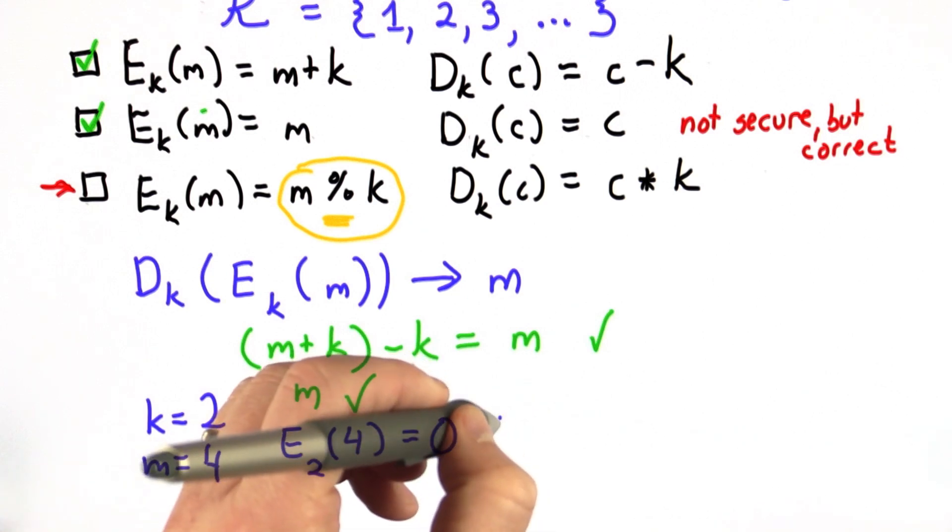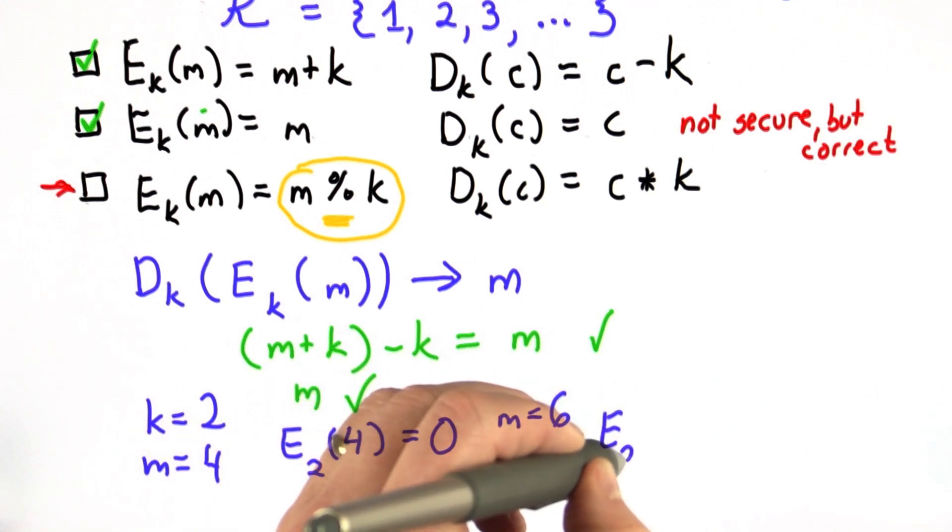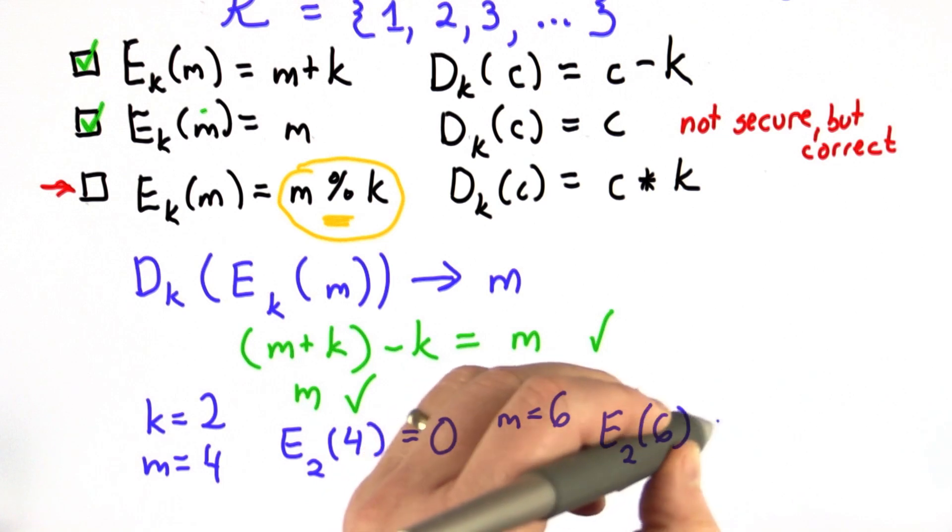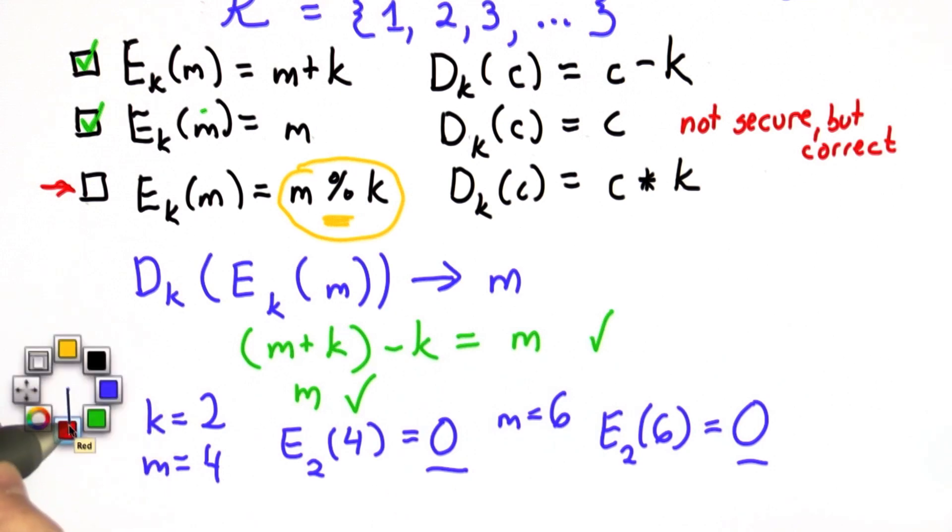But if we also choose the message 6, then the encryption with that same key of 6 is 0. Since two messages map to the same ciphertext, there's no way they could decrypt correctly. They can't both decrypt to different values because decryption is just a function. It takes that input, it's going to produce the same output in both cases. In this case, it's going to produce 0. It's not going to produce the message we need. So this is neither secure nor correct.